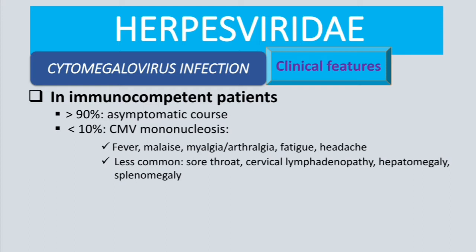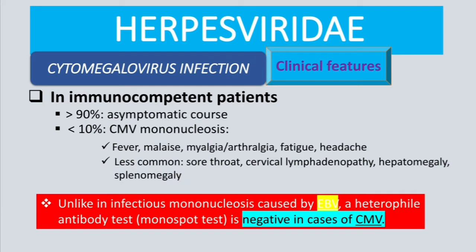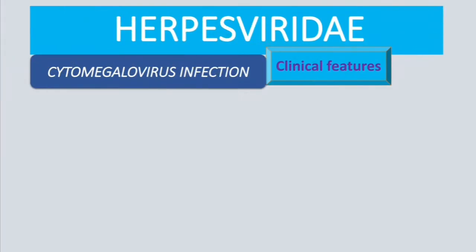Less common features include sore throat, cervical lymphadenopathy, hepatomegaly, and splenomegaly. These mono-like symptoms can be mistaken for infectious mononucleosis caused by EBV. The key differentiator is that the heterophile antibody test (mono spot test) is negative in CMV, unlike in EBV infection.